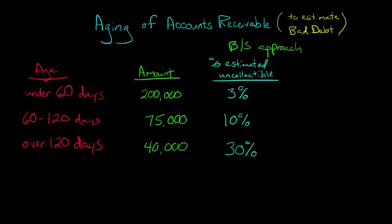Okay, so now we go and we say, all right, we've got our estimates for each one. Now we can go and just multiply this out. Just multiply the amount times the percent that we're estimating will be uncollectible. And we get, in our under 60 day category, we'll get 6,000, 7,500 in our between two and four month category, and then 12,000 in our most delinquent category, the people who haven't paid in a long time.